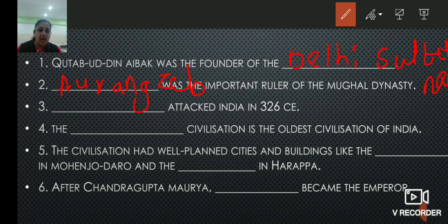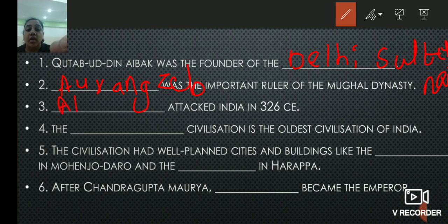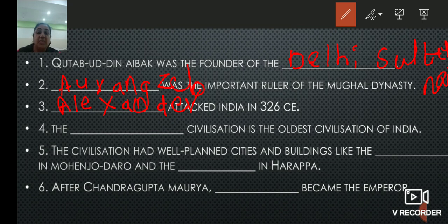Third: blank attacked India in 326 CE. Who attacked India in 326 CE? The answer is Alexander — A-L-E-X-A-N-D-E-R. Alexander attacked India in 326 CE.